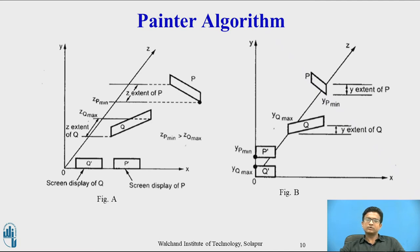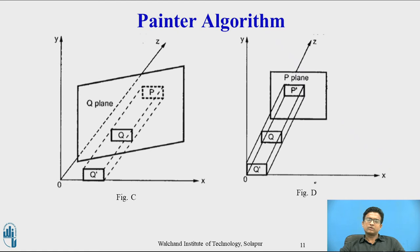In figure B, the Y-extents of P and Q do not overlap. In figure C, there is an overlap where polygon P lies entirely on the opposite side of P's plane.